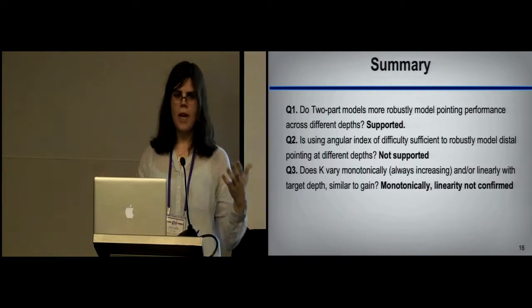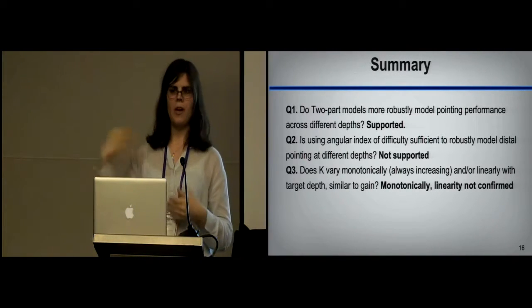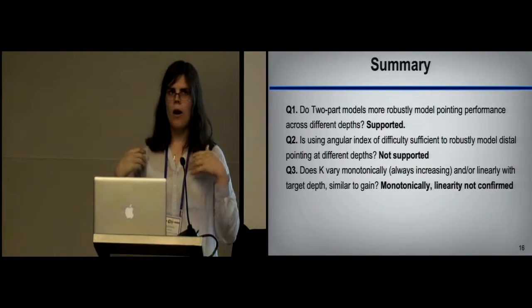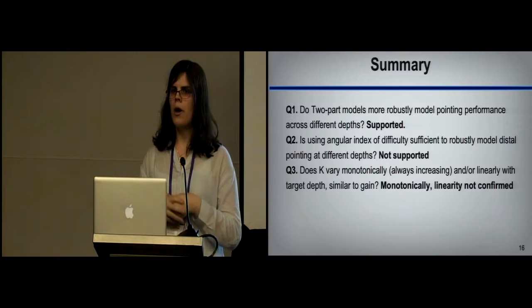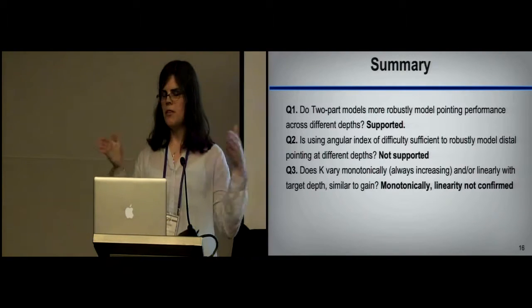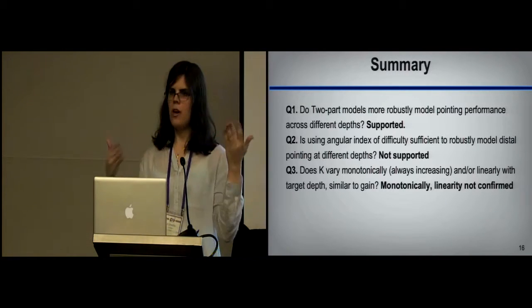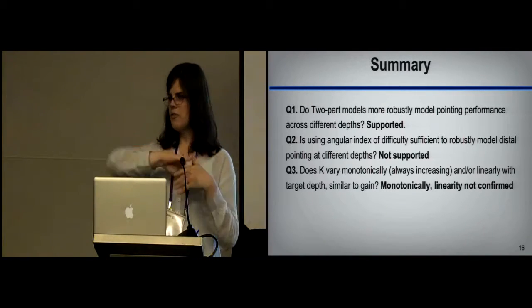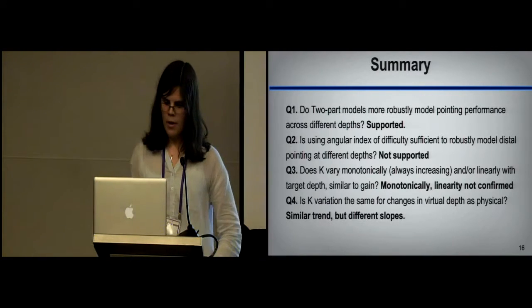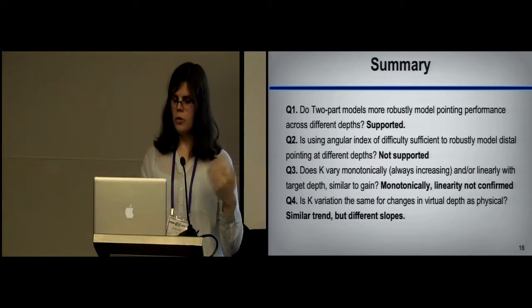For variance of K being similar to gain, it seemed to be a very monotonic relationship. As you got further away, it got bigger. Same thing with gain. We can't conclusively say that it's linear or not. What we kind of noticed is it tailed off a little bit to the end. So, it might be that it's linear for some subset, but as you get further and further away, it stops getting further. So, maybe it's like a linear power relationship. Again, further investigation required.